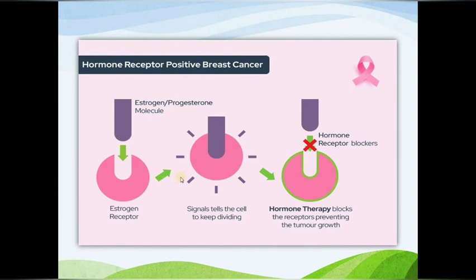In this picture you can easily understand — estrogen and progesterone molecules attach to receptors, which increases the growth of cancer cells. When we block estrogen from binding to the receptor, we can prevent the growth of the tumor.